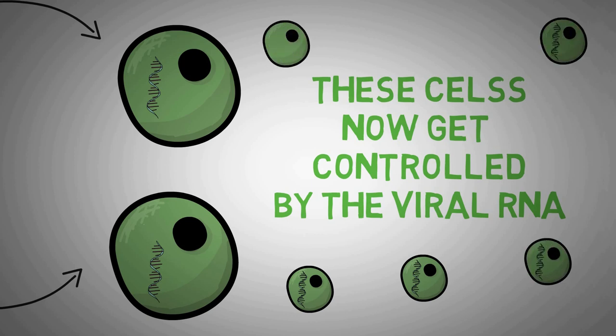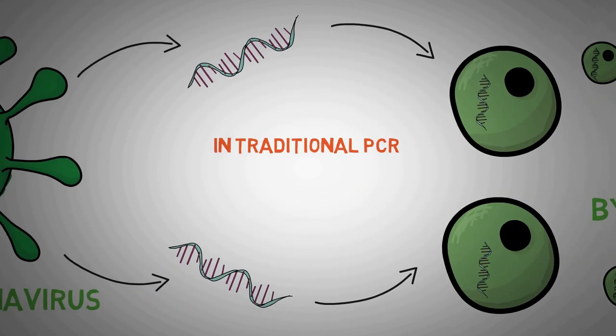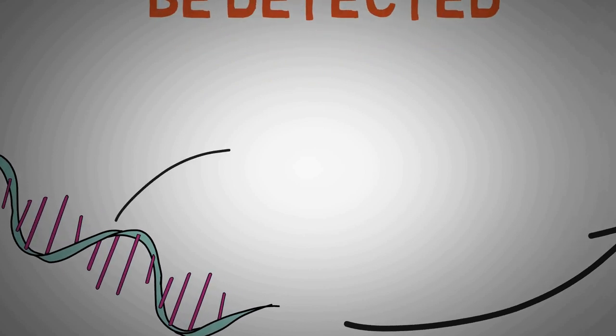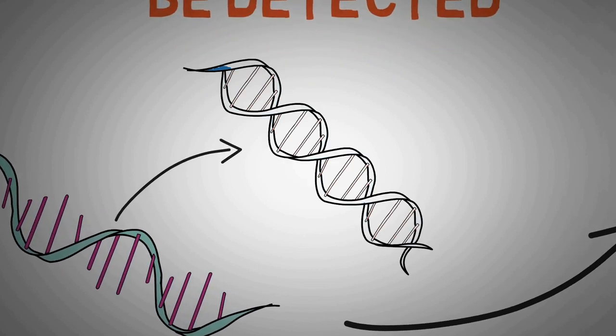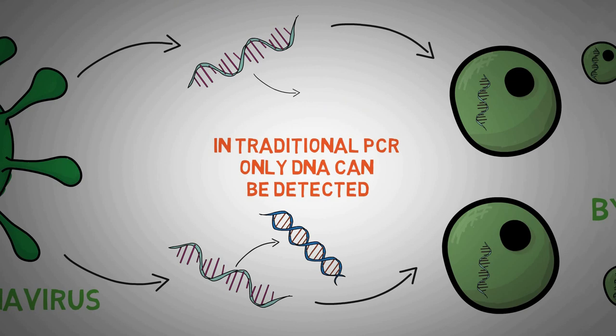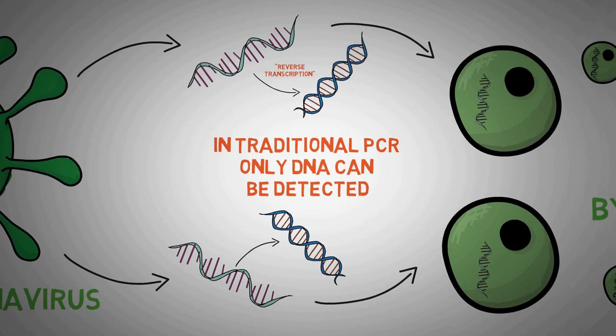This presents a problem for traditional PCR because in traditional PCR, only DNA can be detected or copied. In order for a virus like the coronavirus to be detected by PCR, scientists need to convert the RNA to DNA. This is a process called reverse transcription.